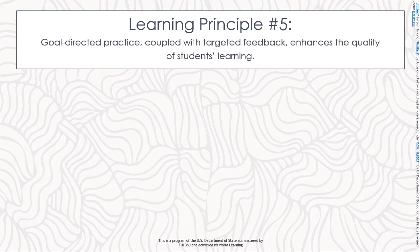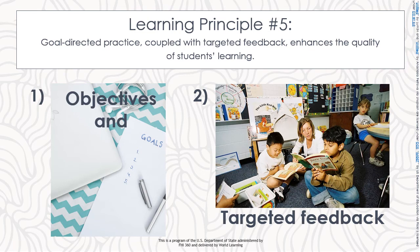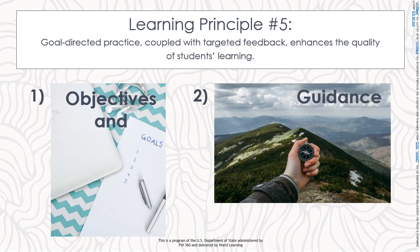Learning principle number five: goal-directed practice coupled with targeted feedback enhances the quality of students' learning. This principle advises teachers in two specific areas. One, we need to communicate to students what their objectives and goals should be. And two, we should provide learners with targeted feedback. This means not simply giving students the correct answer when they make a mistake, but guiding them through the steps to arriving at the correct answer themselves. In this way, students not only learn more, but they also develop skills for future learning.